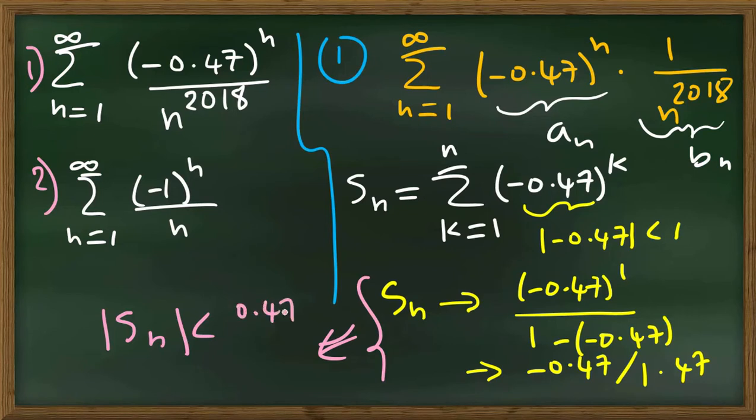And so, that means the absolute value of S_n is less than the absolute of minus 0.47 over 1.47. It's less than 0.47 over 1.47. So the partial sum is bounded.